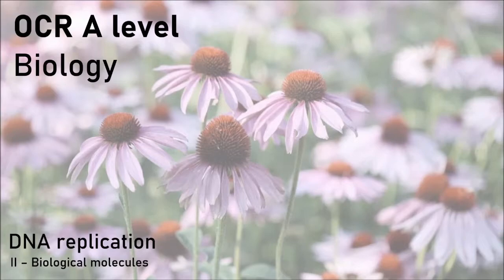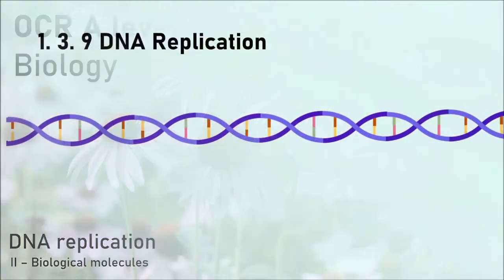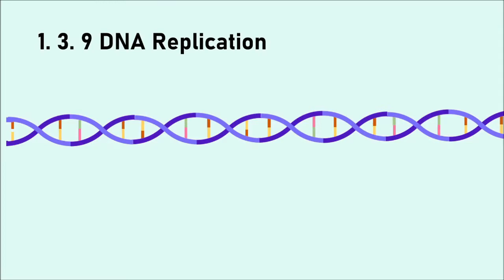I'm going to start by showing you the overall general idea of DNA replication, and then we'll look at it in more detail. Here is our DNA molecule that is subject to replication. As you can see, it's all wound up in the specific double helix shape, and nothing can really happen to the DNA molecule while it's so tightly wound up. So the first stage in DNA replication is the unwinding or unraveling of the DNA molecule. For this to happen, the hydrogen bonds between the bases have to be broken, and the two DNA strands can therefore unwind. This happens with the aid of a specific enzyme called DNA helicase.